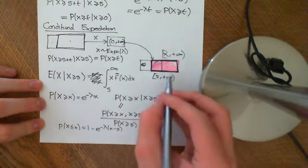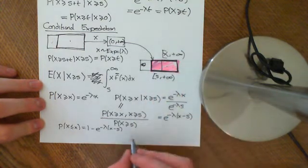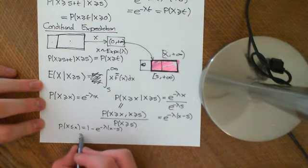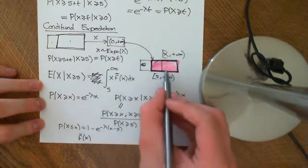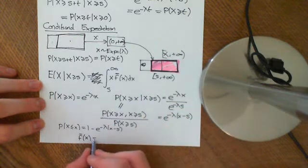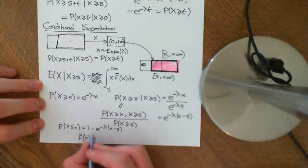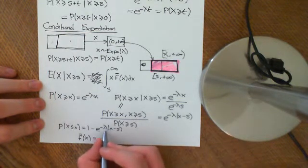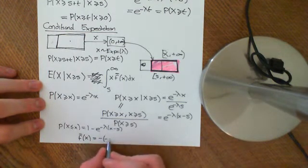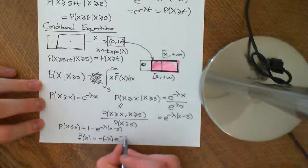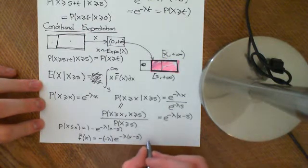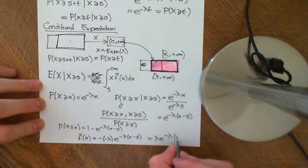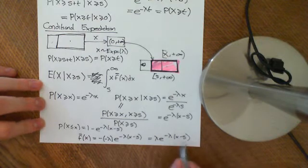Now if we want to go back to the PDF, the PDF for each value in here, all we have to do is differentiate this. So the conditioned PDF is equal to the derivative of that expression. The derivative of 1 is nothing, and the derivative of the exponential term brings down negative lambda, giving negative negative lambda e to the negative lambda of x minus s. So the conditioned PDF equals lambda e to the negative lambda times x minus s, which is what we would have guessed it to be.